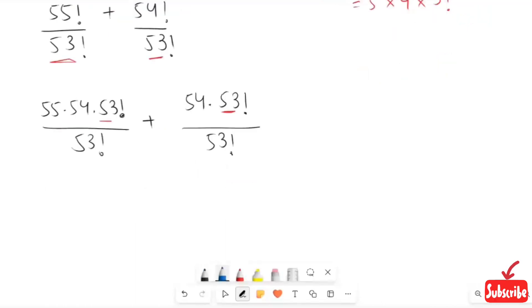Next I'm going to cancel out this factorial 53, and then the remaining value we have is 55 times 54 plus 54.